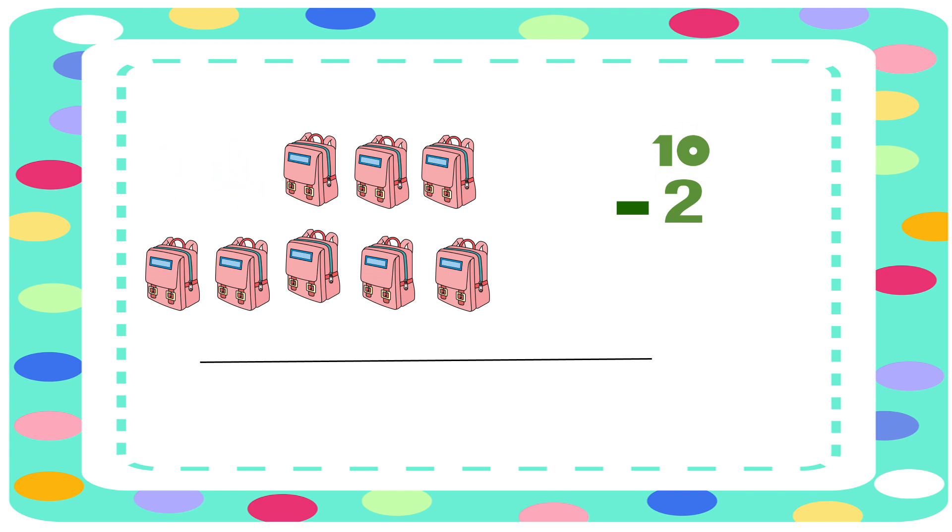Let's find out how many are left. Let's count and see how many remaining: 1, 2, 3, 4, 5, 6, 7, 8. So 10 minus 2 will give us 8. We can also write it like this: 10 minus 2 equals 8.